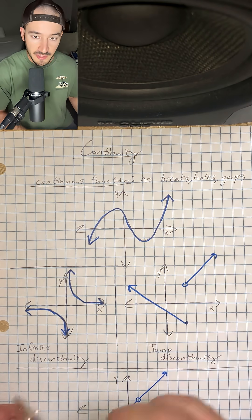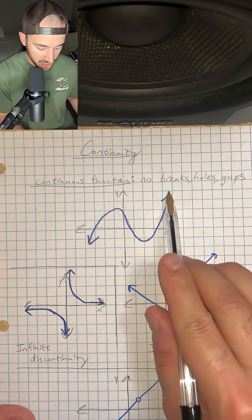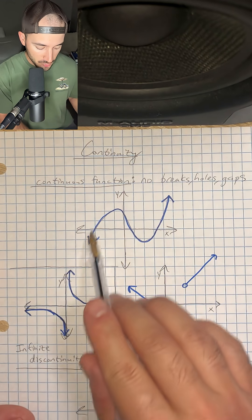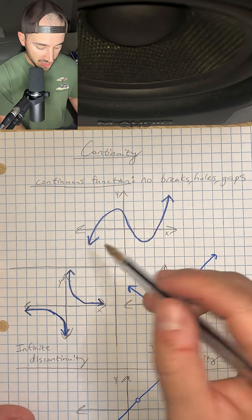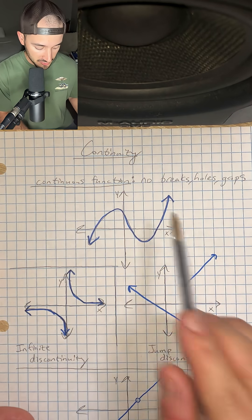Okay, so just think of a continuous flowing function like this graph right here. Okay, there's no holes in it, there's no breaks, and it continues in both directions forever. Okay, so that is a continuous function.